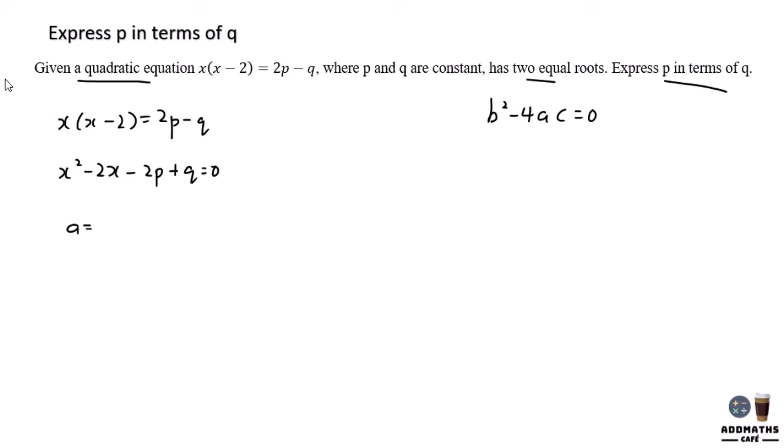And we know that a is equal to 1, b is equal to negative 2, and c is equal to negative 2p plus q. So apply all the a, b, c into the formula. You have this.